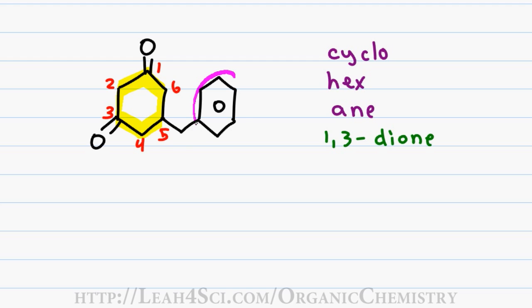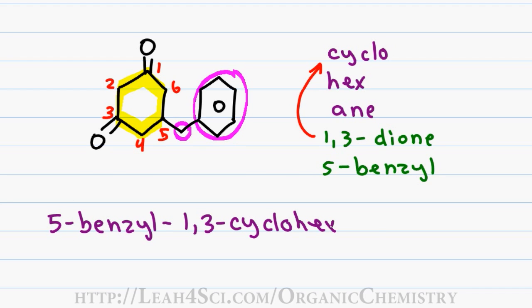While the substituent is a benzene ring, this is not a phenyl group because I also have the CH2 connected to it as one larger substituent. This gives me the prefix of five-benzyl rather than five-phenyl. I pull the numbers one and three in front of the word cyclo for a final name of five-benzyl-one-three-cyclohexane-dione.